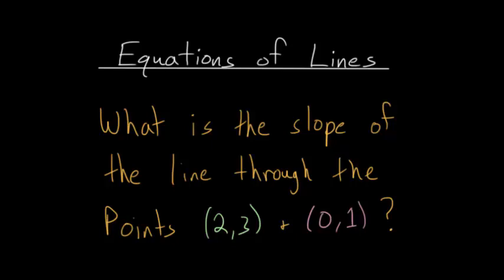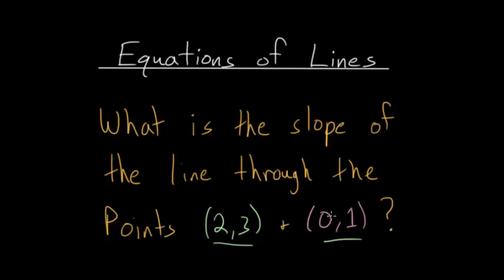For this video I'd like to discuss the idea of finding the slope of a line when it's passing through two unique points. So essentially we're given these two points and if we connect them with a line, we want to find out what the slope of that line is.